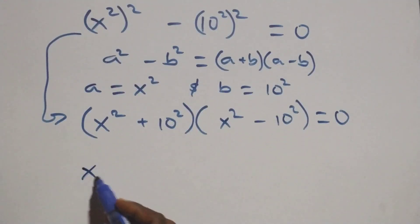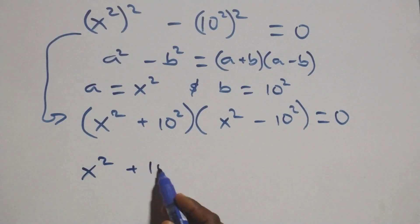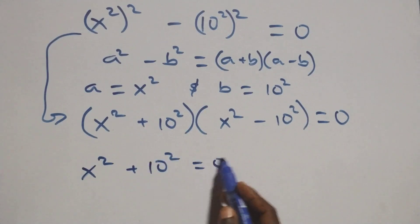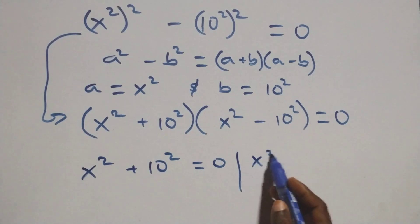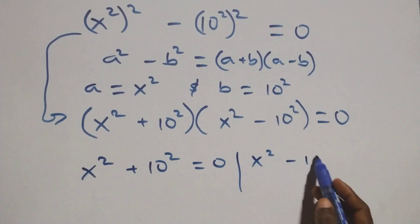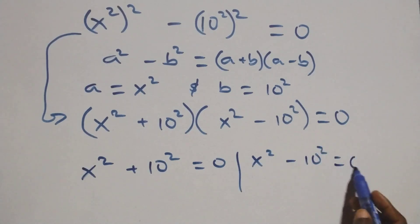This gives us two possible cases: the first one is x squared plus 10 squared equals zero, or we have x squared minus 10 squared equals zero.